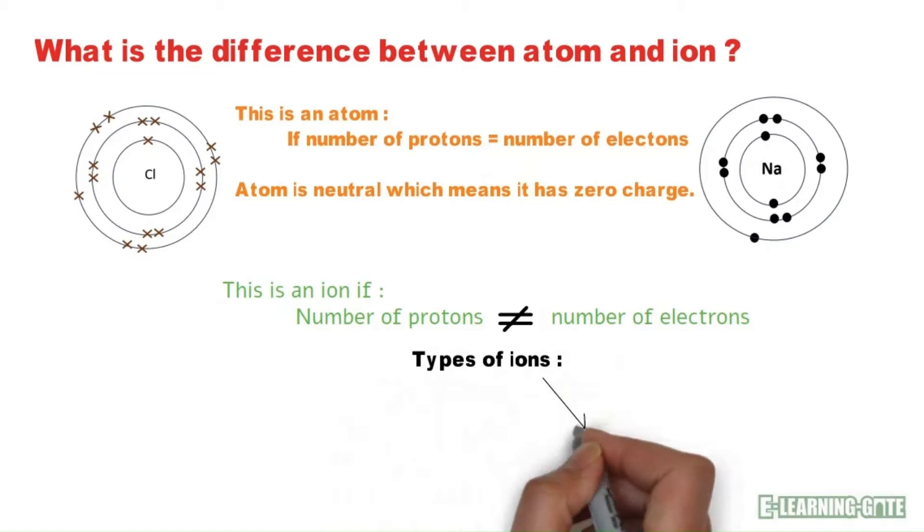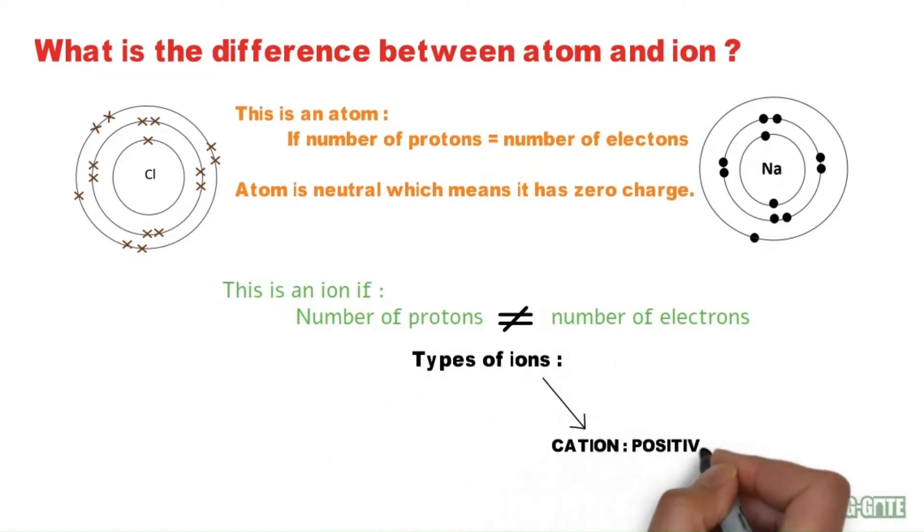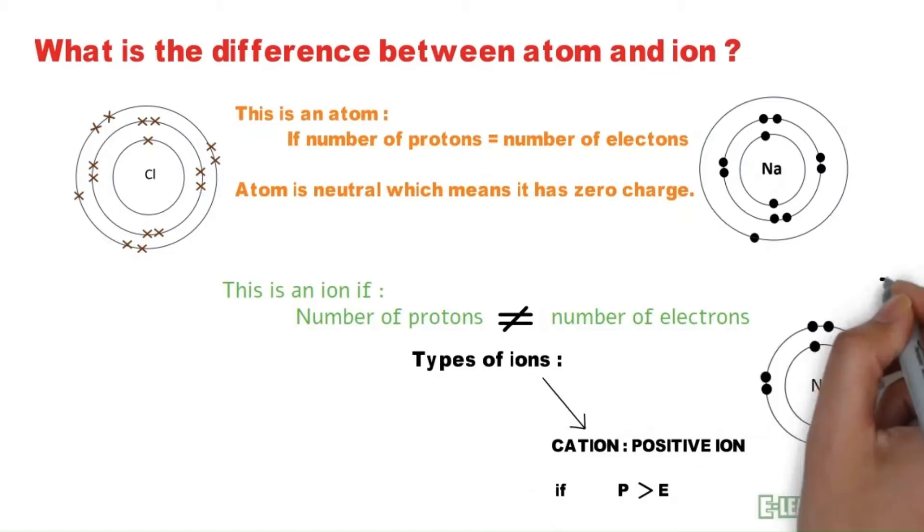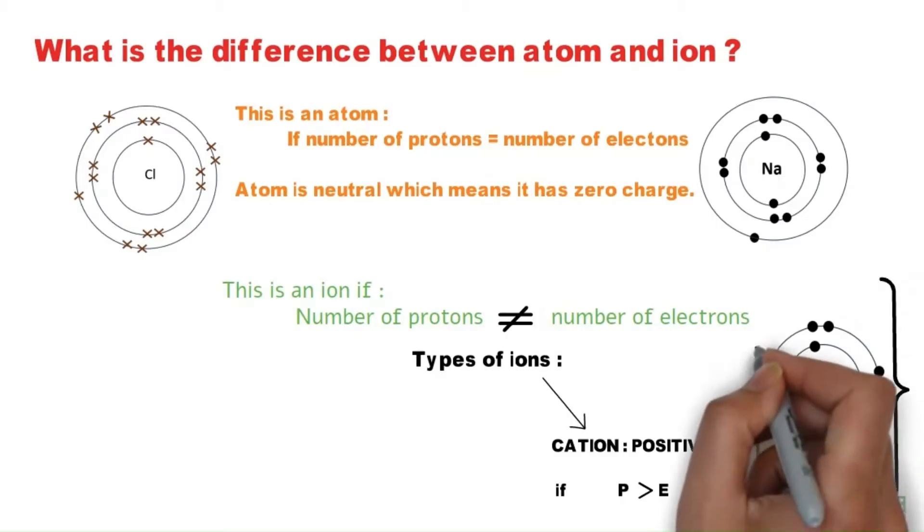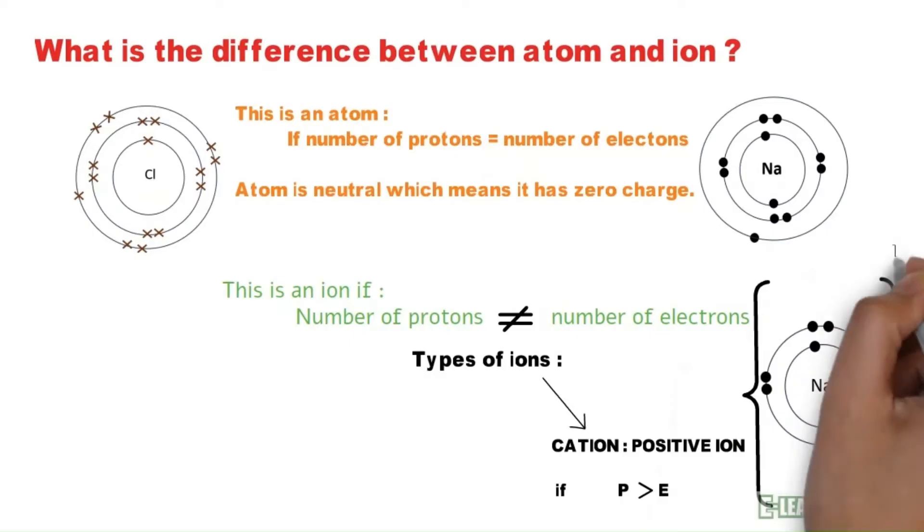There are two types of ions. Cations which are positive ions, where the number of protons are greater than electrons. Sodium ion has positive charge. Compare sodium atom with sodium ion.